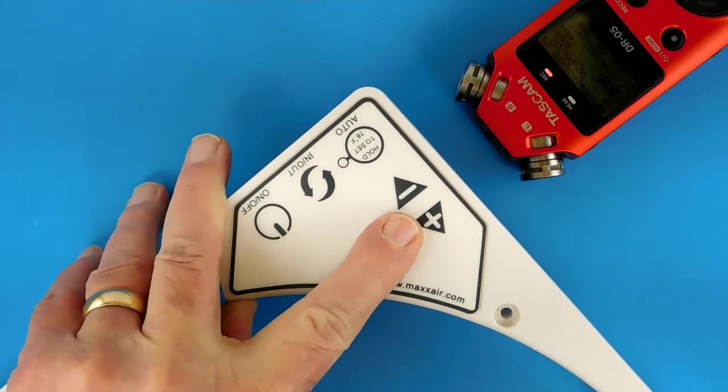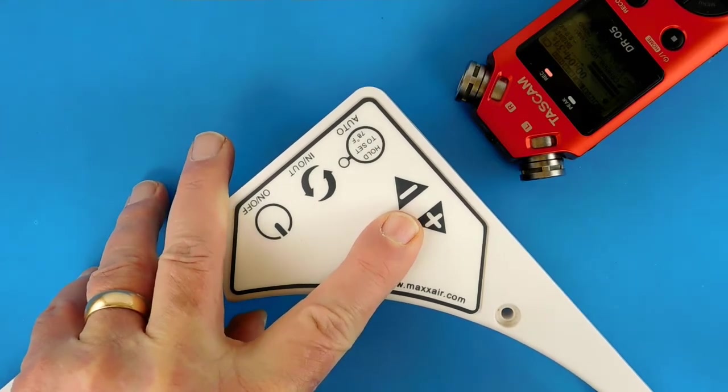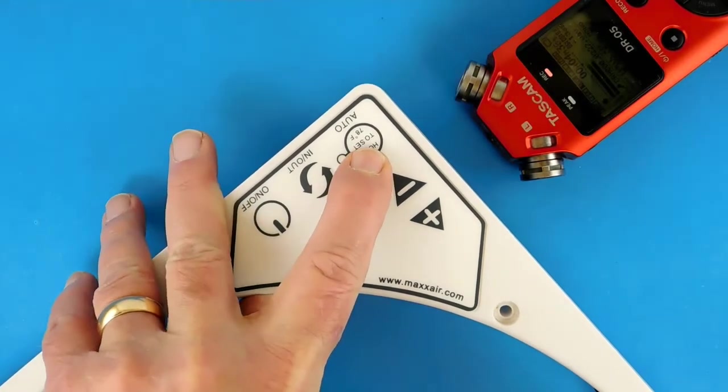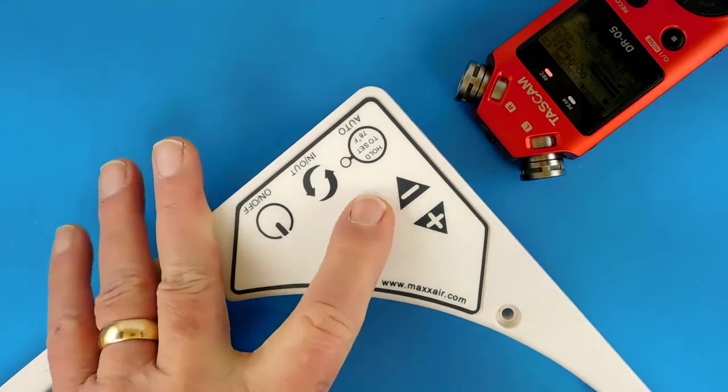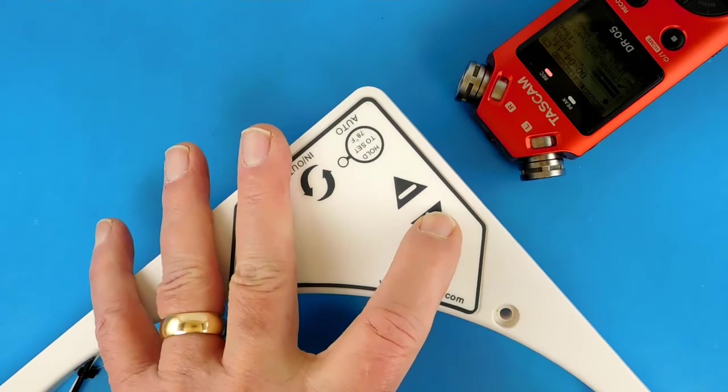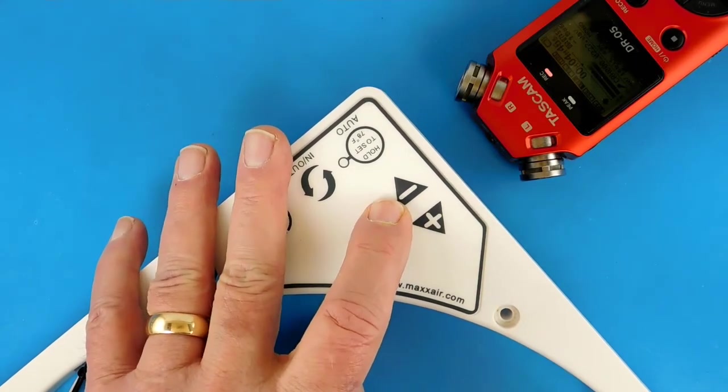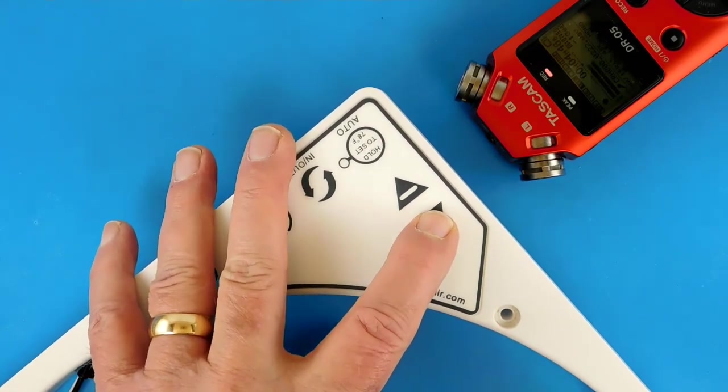These buttons also control the speed of the motor. If you do not have the auto switch on, but the unit is turned on, you can use these buttons to increase or decrease the speed of the motor. You will also hear beeps every time you press the button.